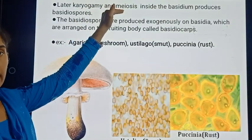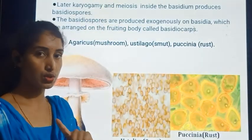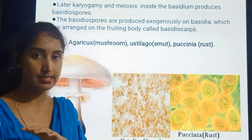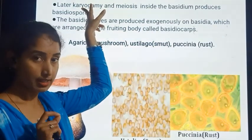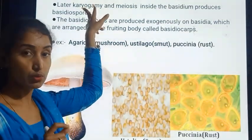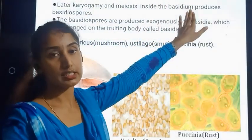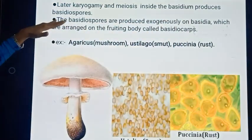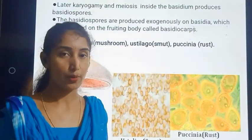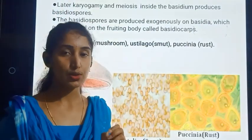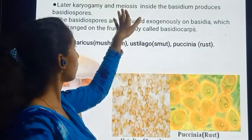Next, karyogamy and meiosis occur. First the fusion of protoplasm takes place, then karyogamy — that is, the fusion of nuclei — occurs inside the basidium. The basidium produces basidiospores, and these spores are always haploid, produced by the process of meiosis.